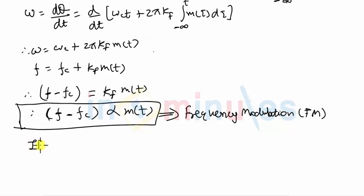You can see that if m is equal to 0, let's say if there is no modulating signal, in that case instantaneous frequency is equal to the carrier frequency, which suggests no change in the carrier frequency.